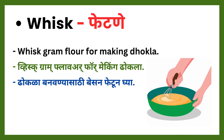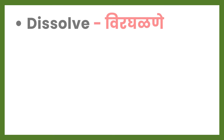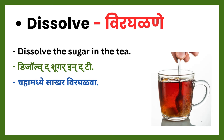Next verb: whisk. Whisk means fatne. Whisk gram flour for making dhokla — dhokla banavnyasaati besan peet fatun ghiya. Next verb: dissolve. Dissolve means virghalne. Dissolve the sugar in the tea — chahya madhye saakhar virghalava.